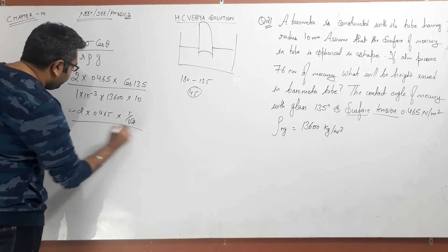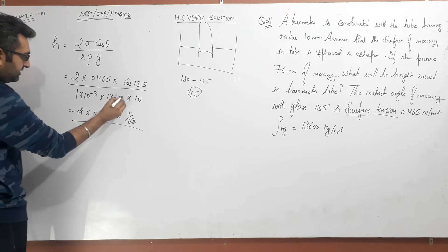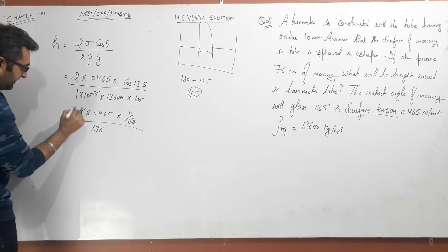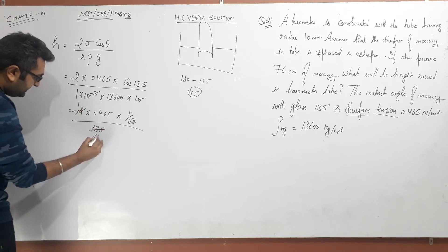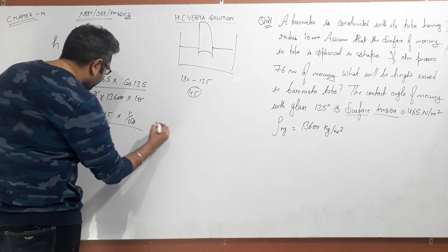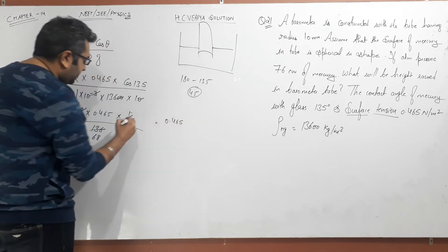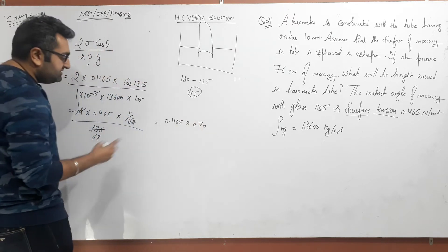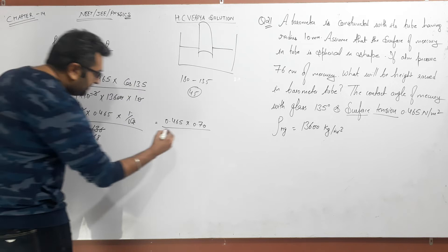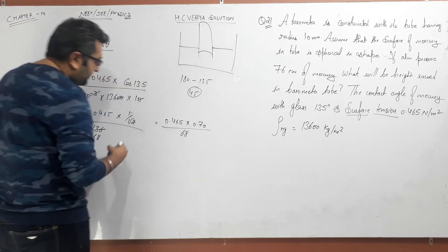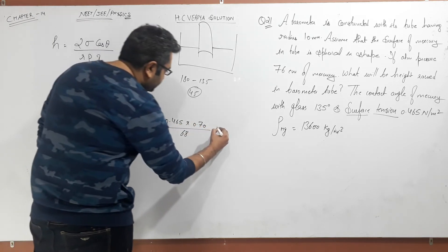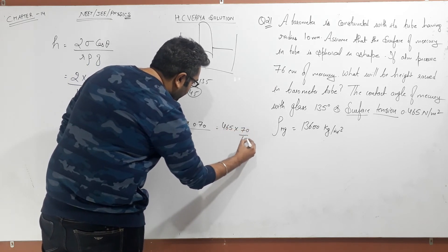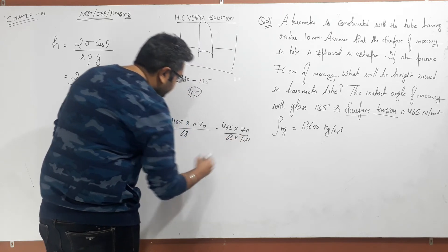So we have 1/√2 in the numerator, divided by 10⁻³ in the denominator. Simplifying: 13,600 is in the denominator — we write 136 and settle. That gives us 0.465 multiplied by 1/√2, which is approximately 0.707. So in the denominator we have 68 after simplification. We can write 0.465 as 465/1000, multiplied by 70 divided by 100, and multiply by 68.